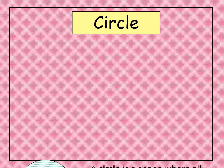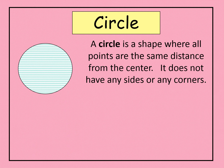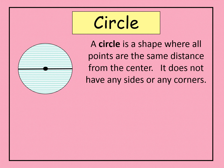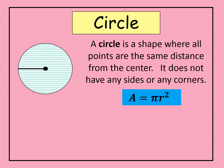The last plane figure is the circle. A circle is a plane figure where all points are the same distance from the center. It does not have any sides or corners. A circle has a diameter, which is a line that divides the circle into two equal parts, and a radius, which is half of the diameter. The formula for the area of a circle is A equals pi R squared, where pi is approximately 3.14 and R is the radius.